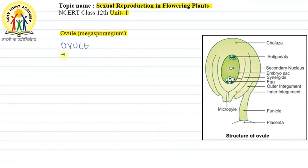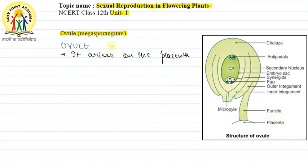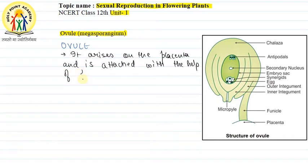Ovule is on the placenta. Now look at the diagram. The placenta makes the connectivity from the structure. That is done by the funicle. It arises on the placenta and is attached to it with the help of funicle. You can also call it funiculus.